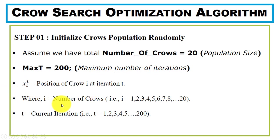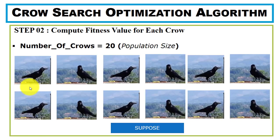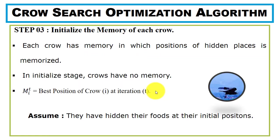The value of i ranges from 1 to 20 since we have 20 crows total, and t ranges from 1 to 200 since the maximum number of iterations is 200. Using this notation we can display the position for any crow. In the second step we compute the fitness value for each of the 20 crows. In the third step we initialize the memory for each crow, since they memorize hiding place positions.